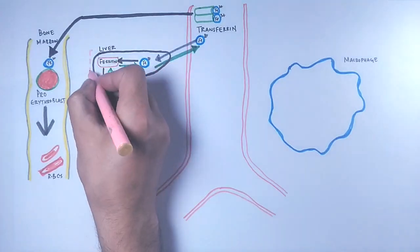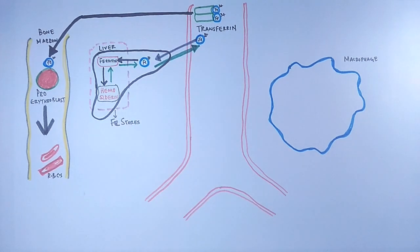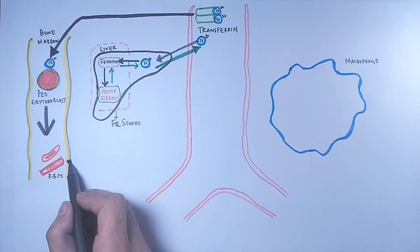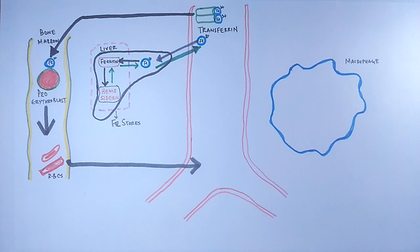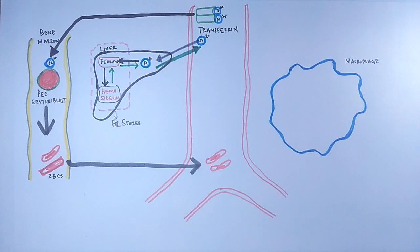Getting back to the bone marrow where we saw erythropoiesis and RBCs entering circulation, it must be noted that not all erythroblasts mature into RBCs. There are some malformed erythroblasts due to inefficient erythropoiesis, and from these malformed erythroblasts, two different iron entities are released.